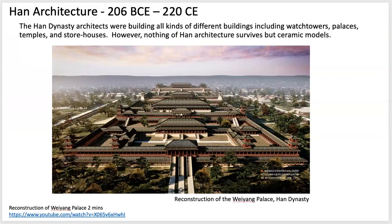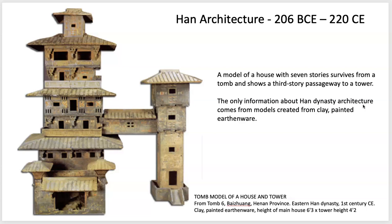During the Han dynasty, all different types of architecture were being built. Here's a digital drawing reconstruction of one of the palaces — most buildings were destroyed because they were built with wood, which doesn't last forever, and also due to fire. However, ceramic models that have been found give indication of the achievements of these architects, showing almost apartment-like structures built up in city structures during the Han dynasty.